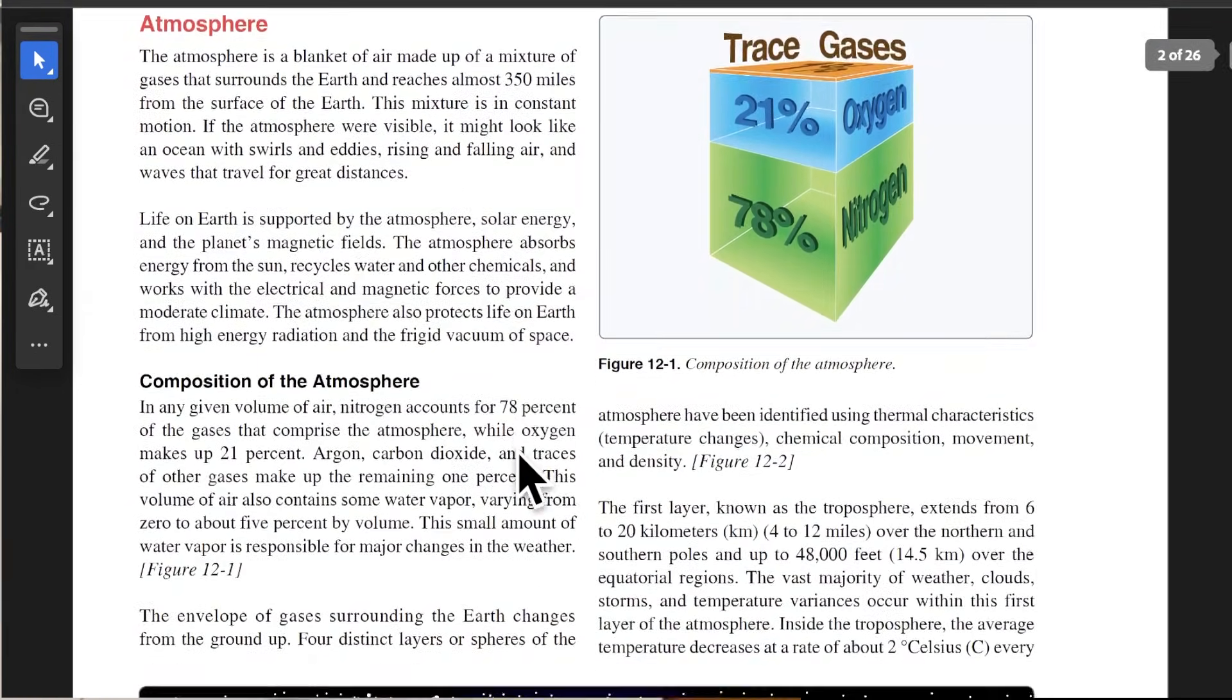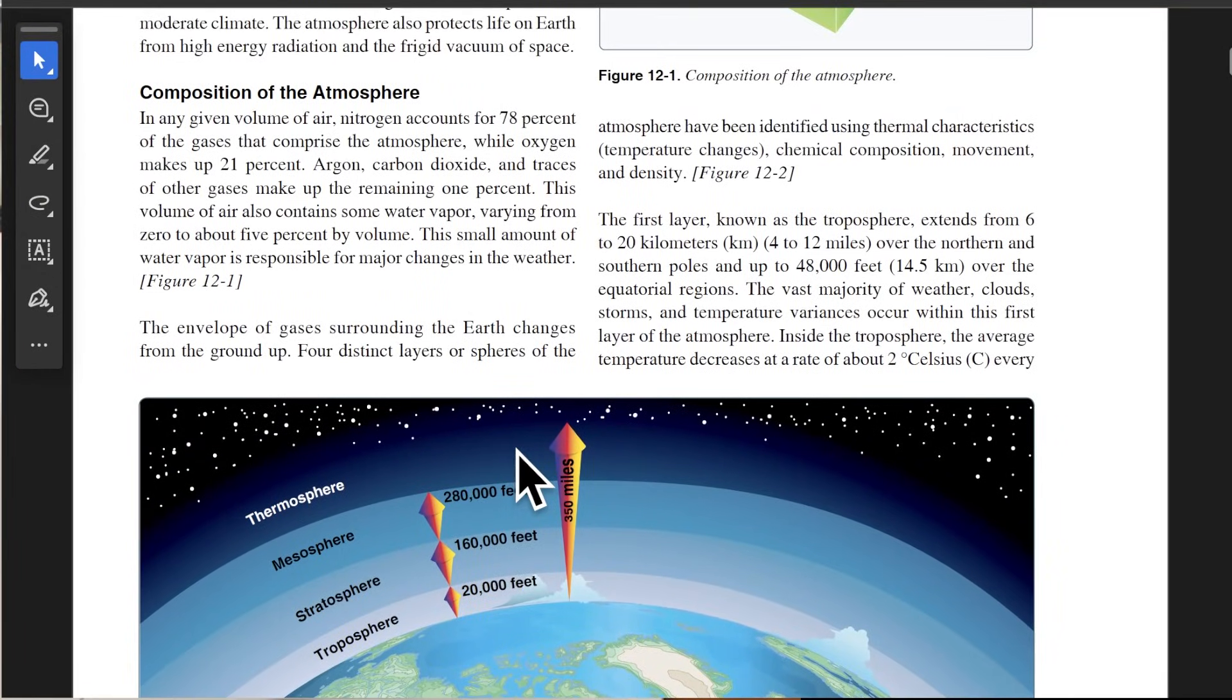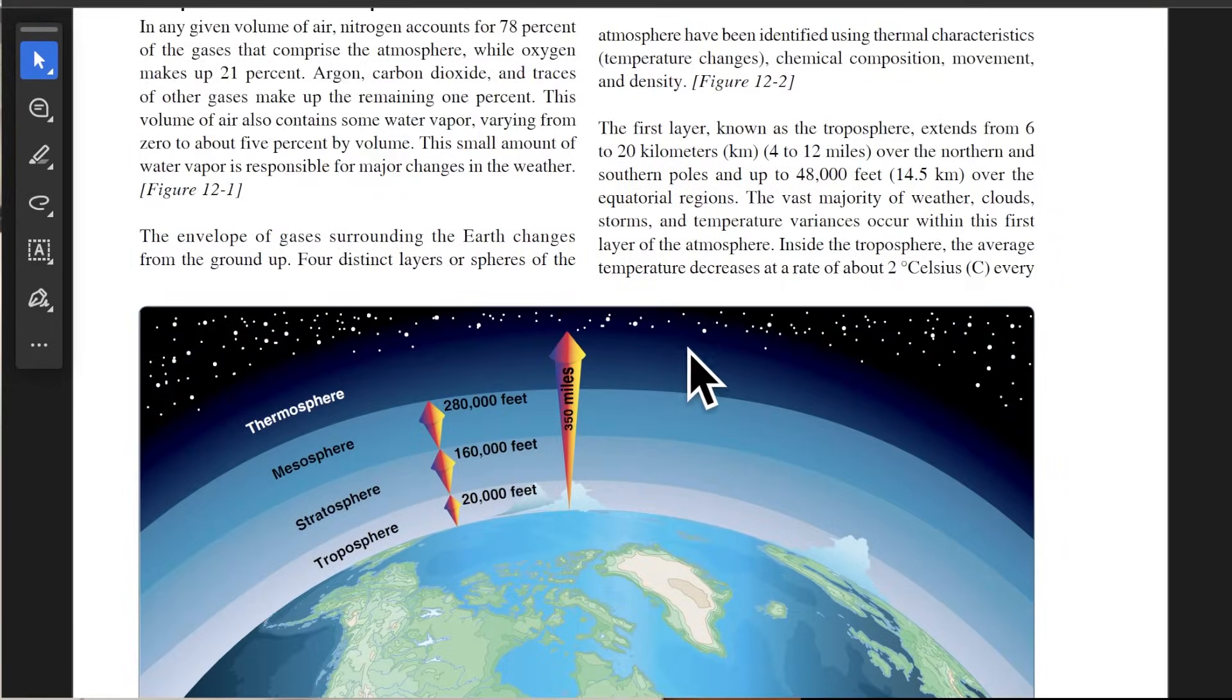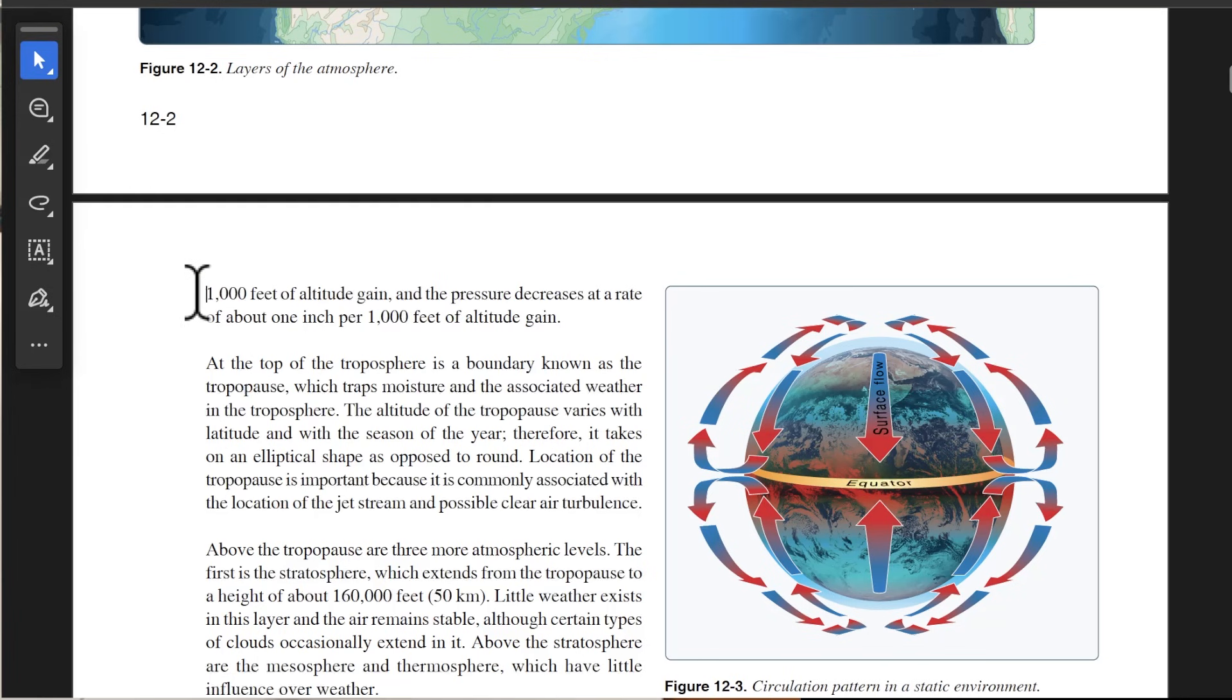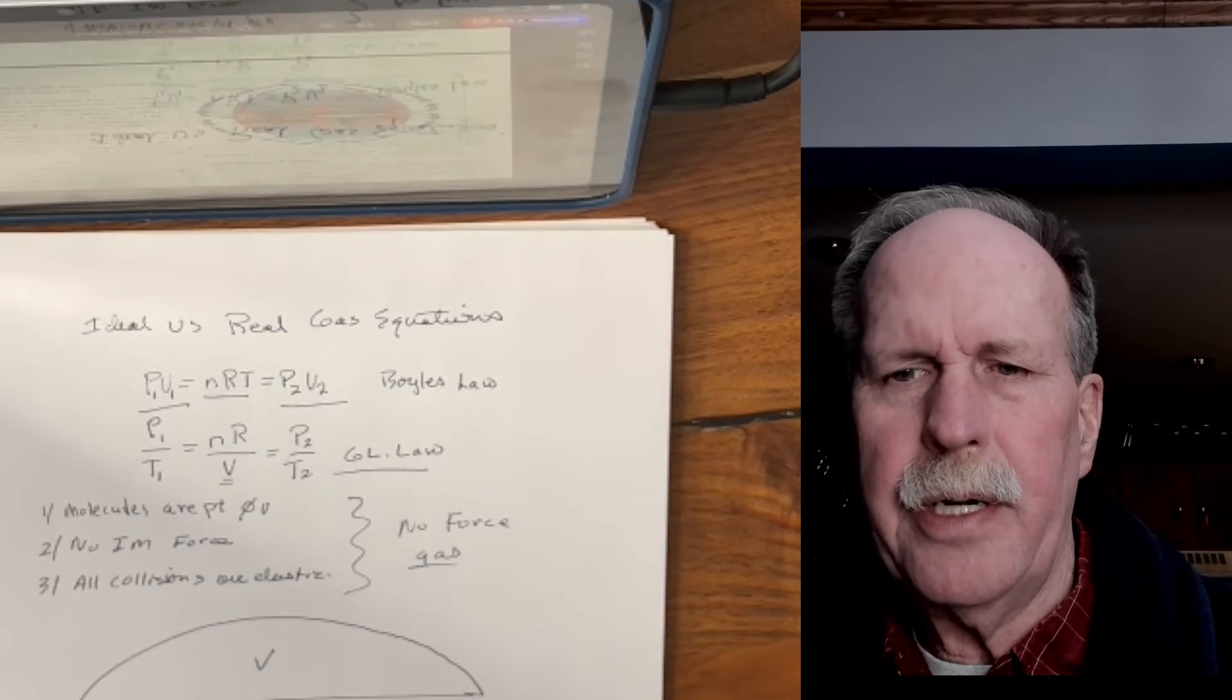Here we talk about the composition of the atmosphere. Oh, there's another flat, non-rotating earth talking about the limits of the troposphere. Now right here we've got a very interesting point that it makes. If you look right here, you'll see that inside the troposphere, which is the lowest layer of the atmosphere where all the weather is, the temperature decreases at a rate of about two degrees Celsius for every thousand feet. And furthermore, the pressure drops about one inch of mercury for every one thousand feet.